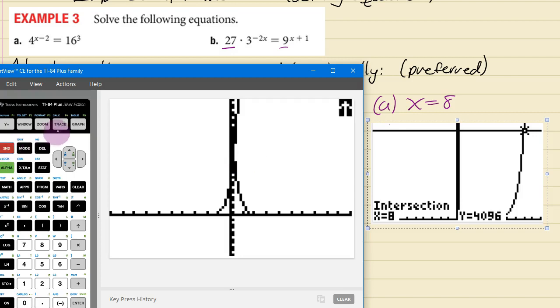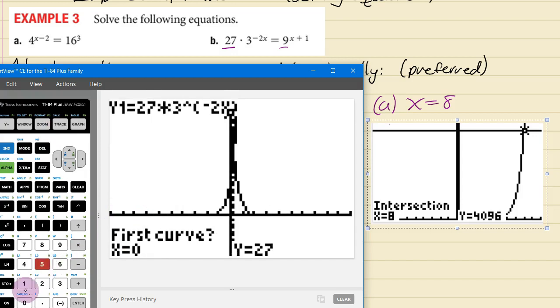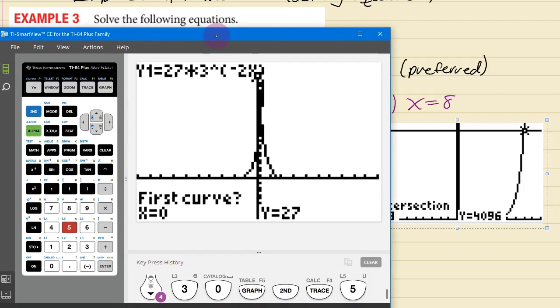Okay that looks like we can kind of see that they probably intersect in there somewhere. So let's do the second calc. We're going to do number 5 intersect.